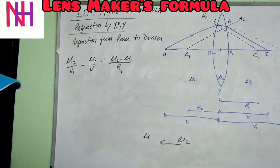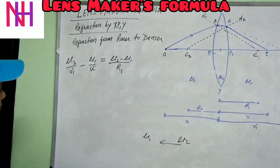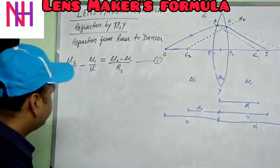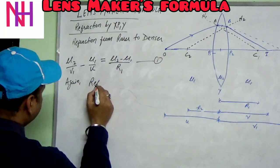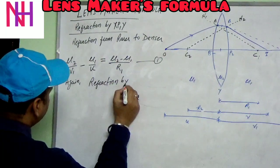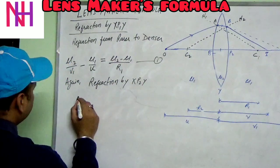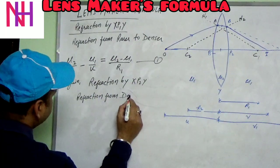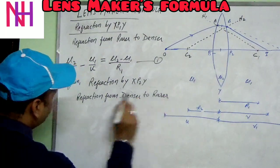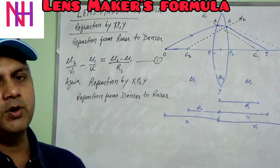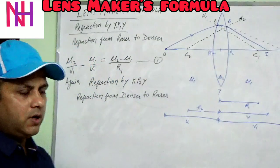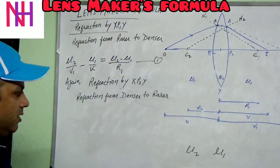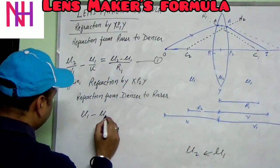Second case: refraction by surface X-P2-Y. This is refraction from denser to rarer — glass to air. Here, mu2 is always the denser medium and mu1 is always the rarer medium. So the formula becomes: mu1/v minus mu2/v1 equals mu1 minus mu2 over R2. This is equation 2.